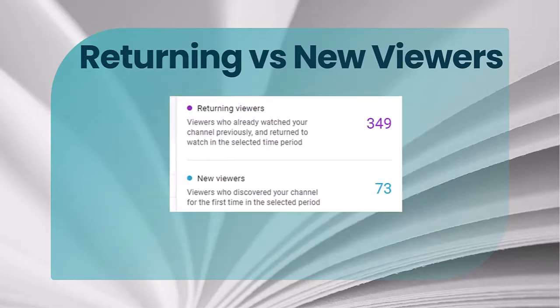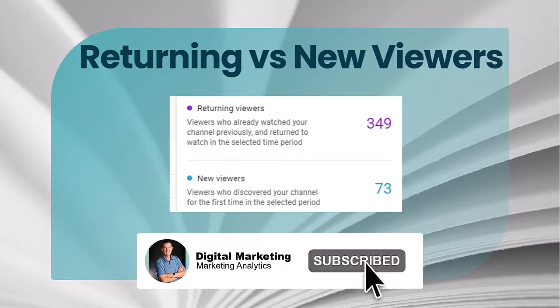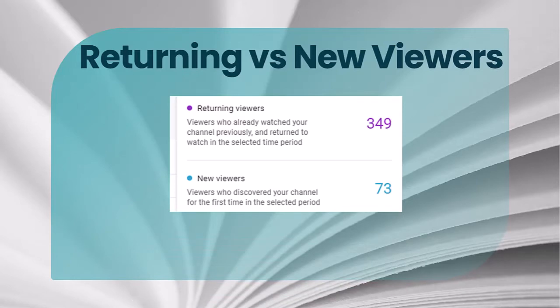This is a particular day of a video. When you hover over the individual day in a time frame — or if you're going by months or years — you can see how many returning and new viewers you had. On this day, it shows 349 returning viewers and 73 new viewers for that video. That means new people came to see that video on that channel.